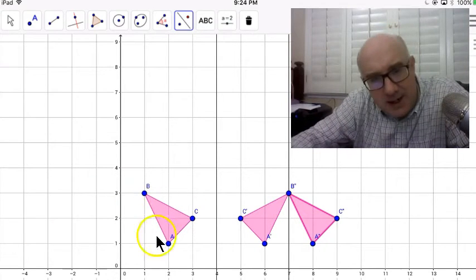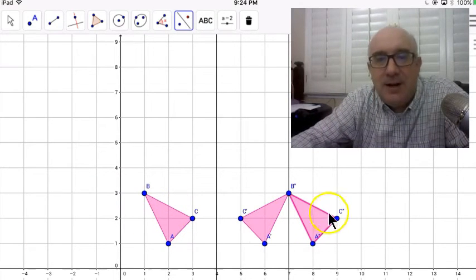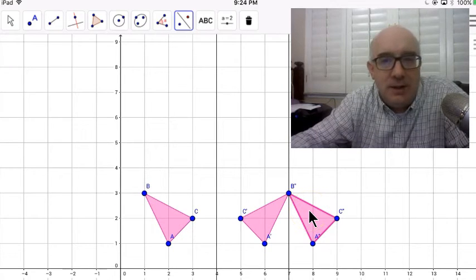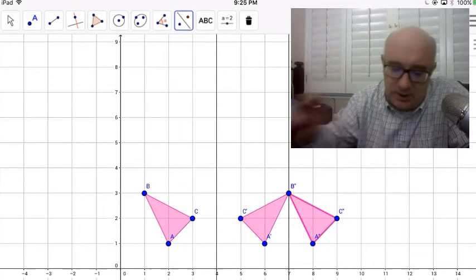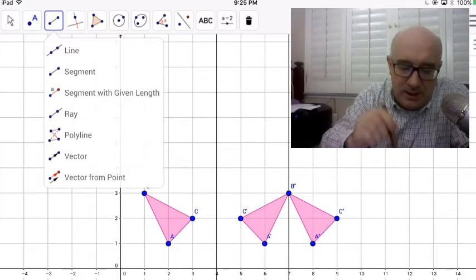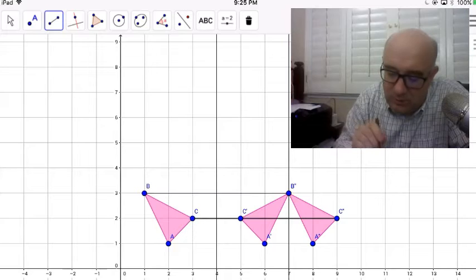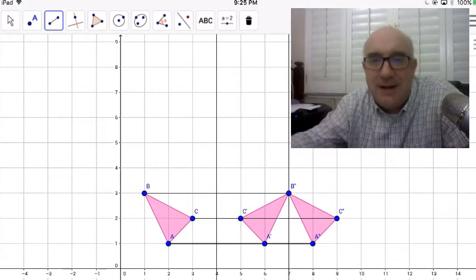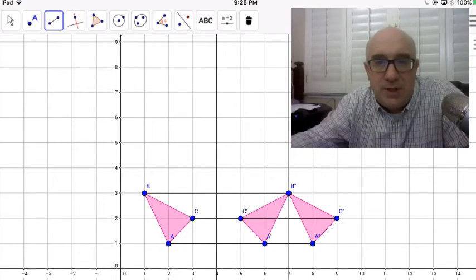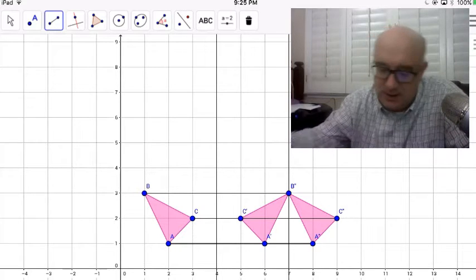Now you can kind of see here that this triangle and this triangle now have the same orientation. They seem to be a translation of each other. If we pulled out the segment tool, I think we would find that they all moved the same length in the same direction, which is a characteristic of translation.